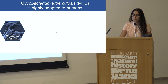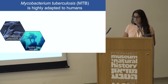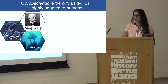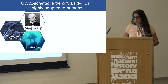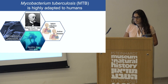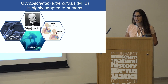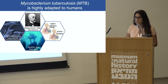Mycobacterium tuberculosis is a pathogen highly adapted to humans. Its first evidence in humans is dated to about 9,000 years ago. However, only in 1882, Robert Koch discovered that the highly infectious disease tuberculosis, shortly named TB, is caused by these bacteria. These bacteria typically infect the lung macrophages, either residing there creating latent infection, which is not symptomatic and not infectious.